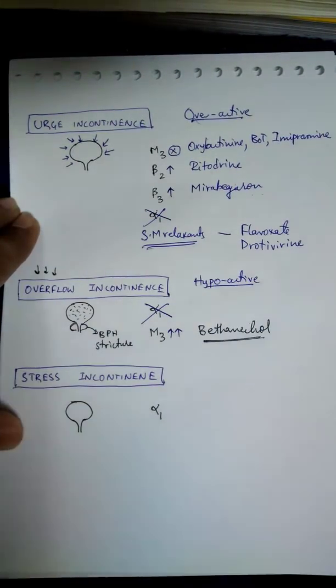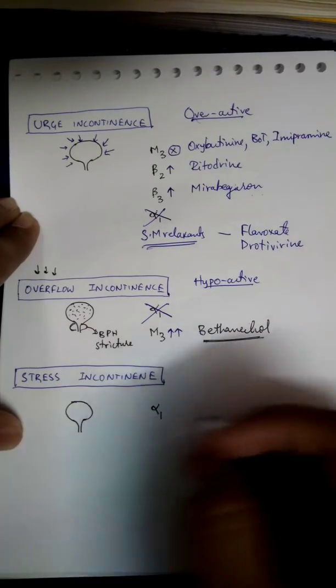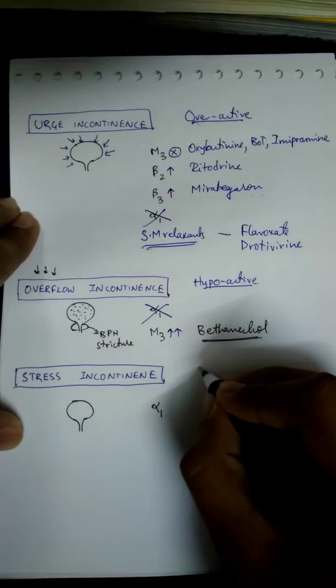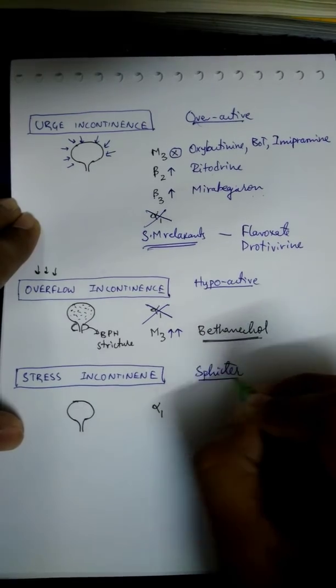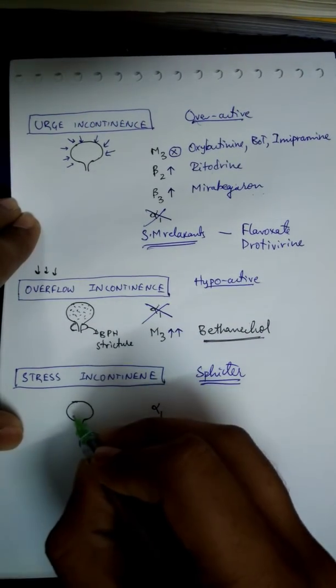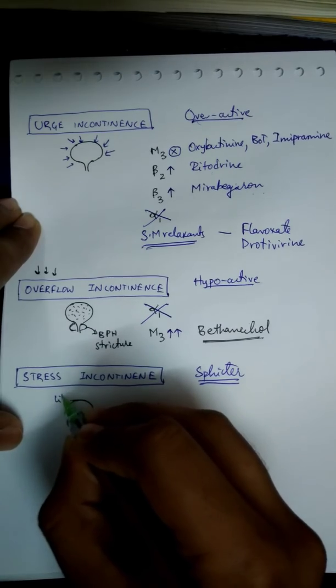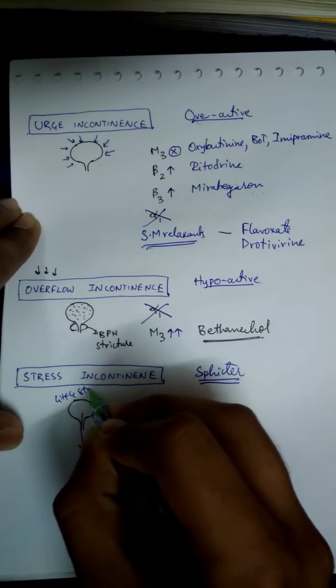Now coming to stress incontinence. Here the problem is at the sphincter level. The bladder urinates with little stress - even if you sit down or press your pubic area, the urine comes out.